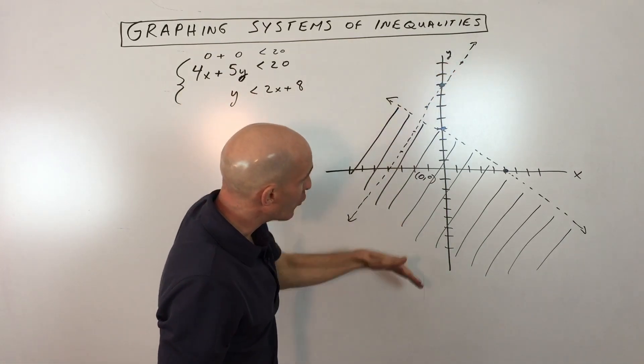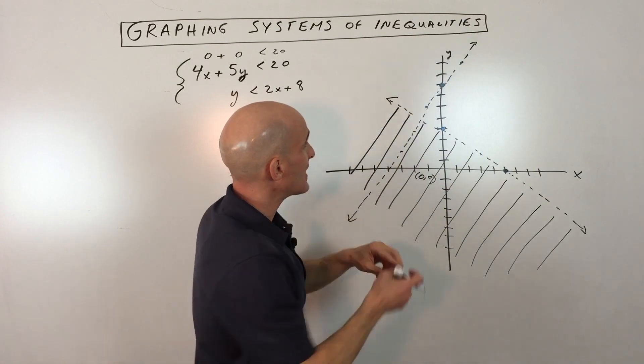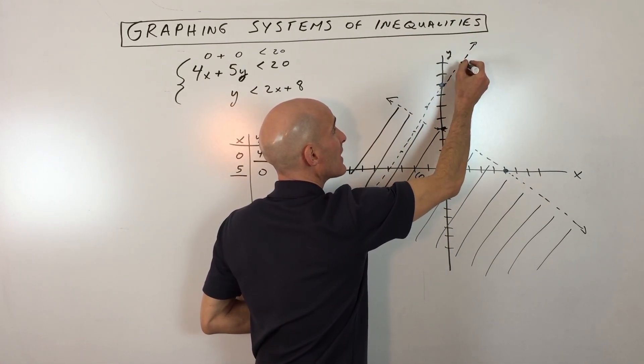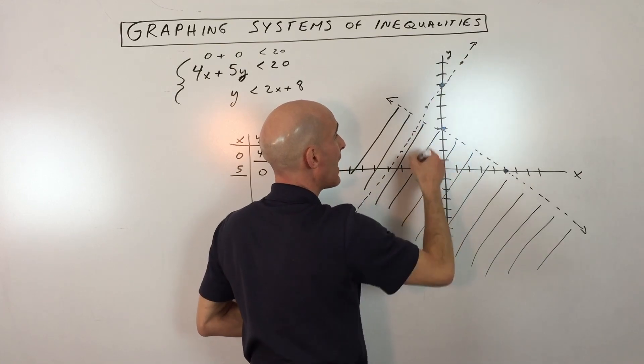So if it's in this form where the y is by itself, less than means you just shade below the line. Not left, not right, but straight down. So if you pick a point on this line, greater than would be straight up from this point, less than would be straight down.